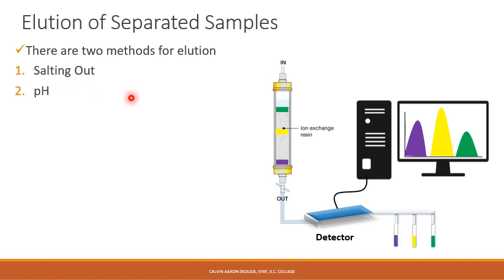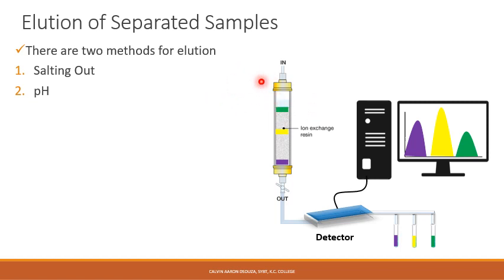There are two elution methods. One is the salting out technique. This basically involves a salt solution that is allowed to pass through the column. The salt solution can be of varying concentration depending on the sample used. As the salt solution enters the column, salt converts itself into Na+ and Cl- ions. If this is an anion exchange chromatography, the Cl- would go and exchange itself with the negatively charged protein, which would then be eluted out and leave the column. This salting out technique can also be used for cation exchange — the Na+ would come and bind with the charged groups, and the protein would be eluted out.